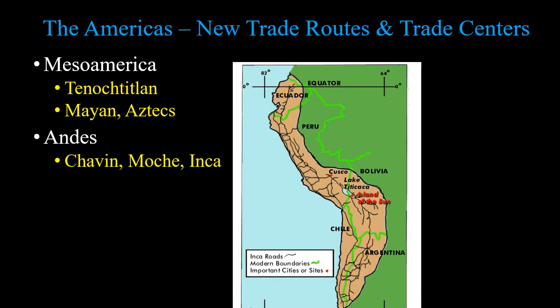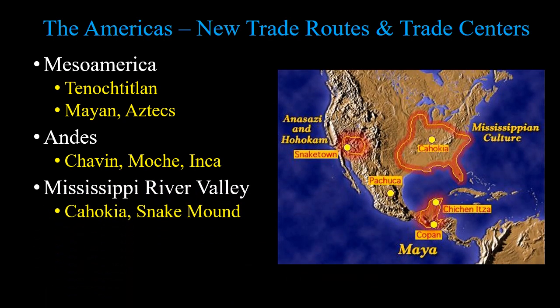In the Andes, going along the mountain ranges, you have the Chavin, the Moche, and these will be the precursors to the Inca. In the Mississippi area, you have smaller centers like Cahokia, the Mound Builders, Serpent Mound, and all that. There doesn't really seem to be evidence that they were engaged in direct trade with each other. The Americas got off to a late start, so they're always a little behind on trade and economic development.